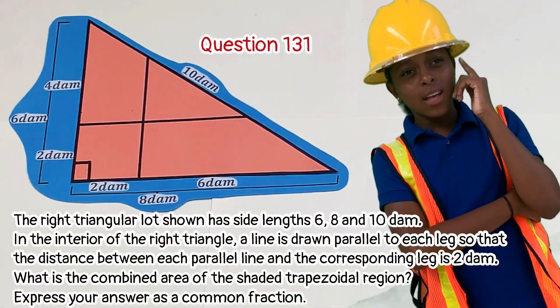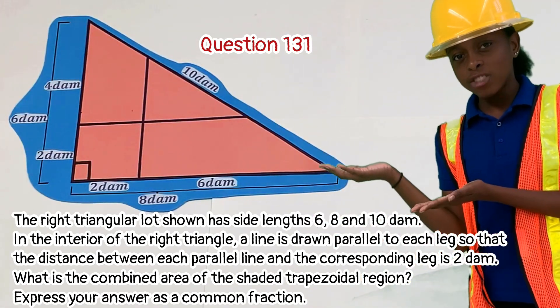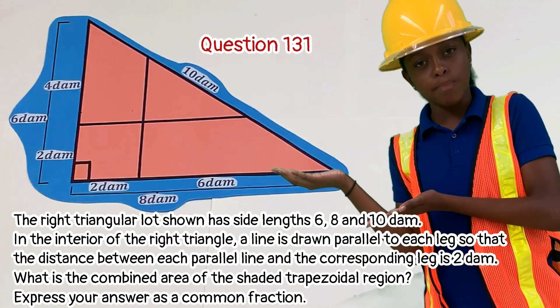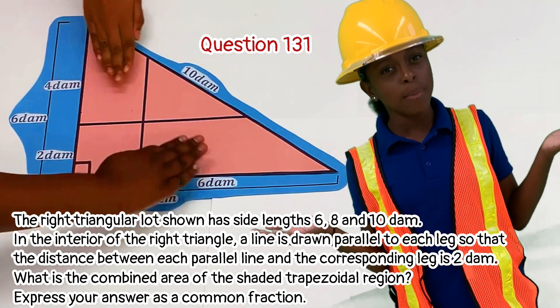The right triangle lot has a stat like 6, 8 and 10 decimeters. In the interior of the right triangle, a line is drawn parallel to each leg so that the distance between each parallel line and corresponding leg is 2 decimeters. What is the combined area of the shaded trapezoid region?